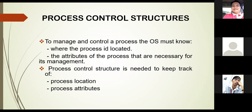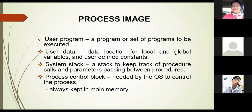Process control structure: to manage and control a process, the OS must know where the process is located and the attributes of the process necessary for its management. The process control structure keeps track of process location and process attributes. The process image includes: user program — the program or set of programs to be executed; user data — data locations for local and global variables and user-defined content; system stack — a stack to keep track of procedure calls and parameter passing; and the process control block, which is needed by the OS to control the process and is always kept in main memory.